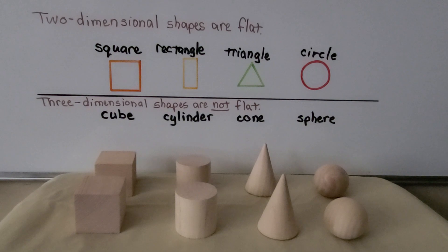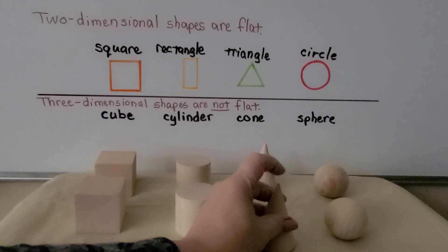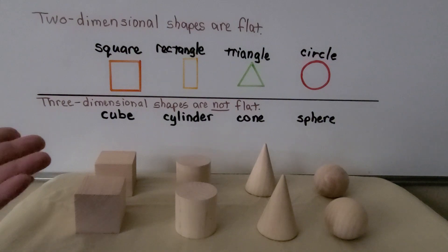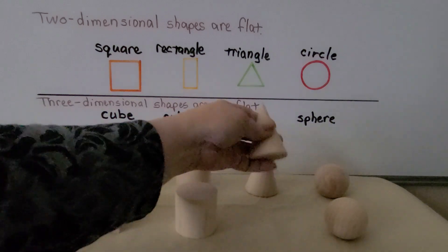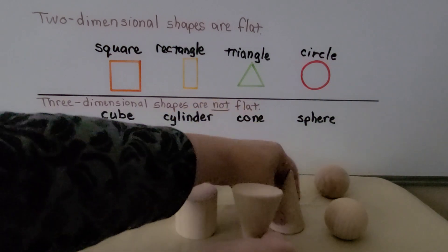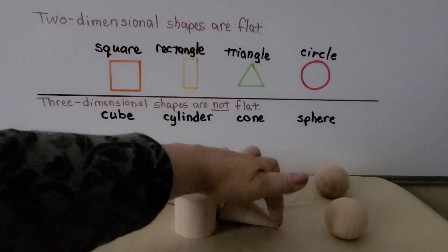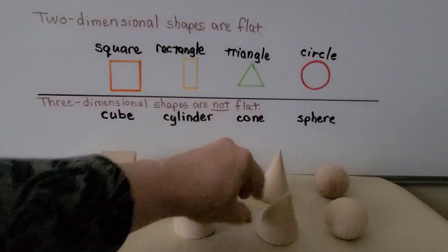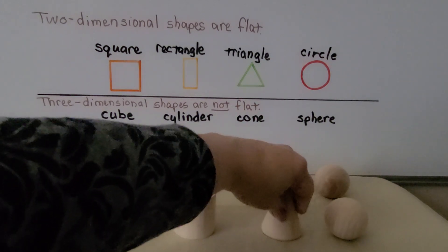A cone has only one flat surface, and it's got this point. So we can't stack a cone. If we try to stack the cones, we can't. And even if we tried putting the flat surfaces together, it won't stand because of the point. So we can't stack a cone. But you know what we could do with a cone? We could roll it, because it's got a curved surface.